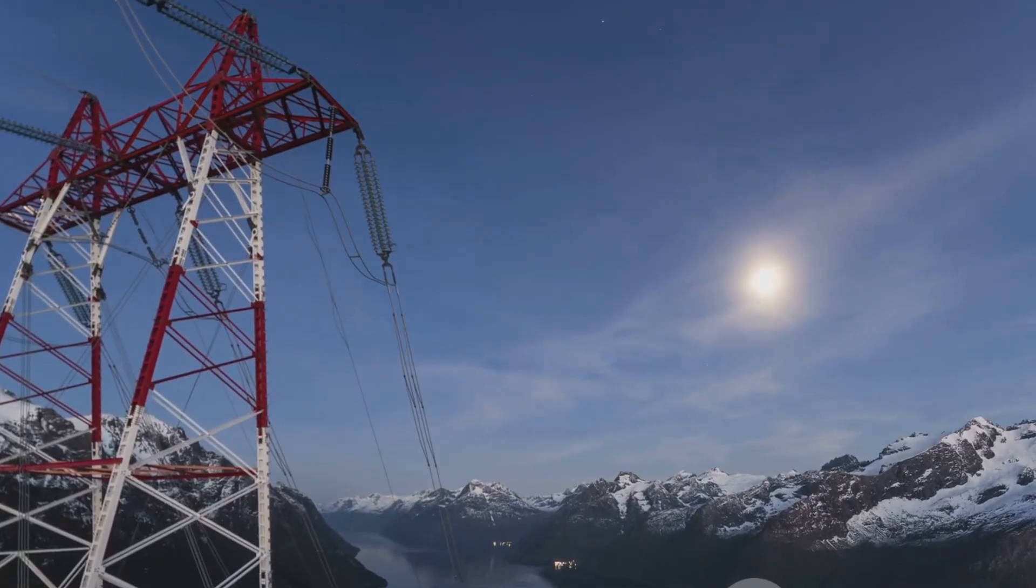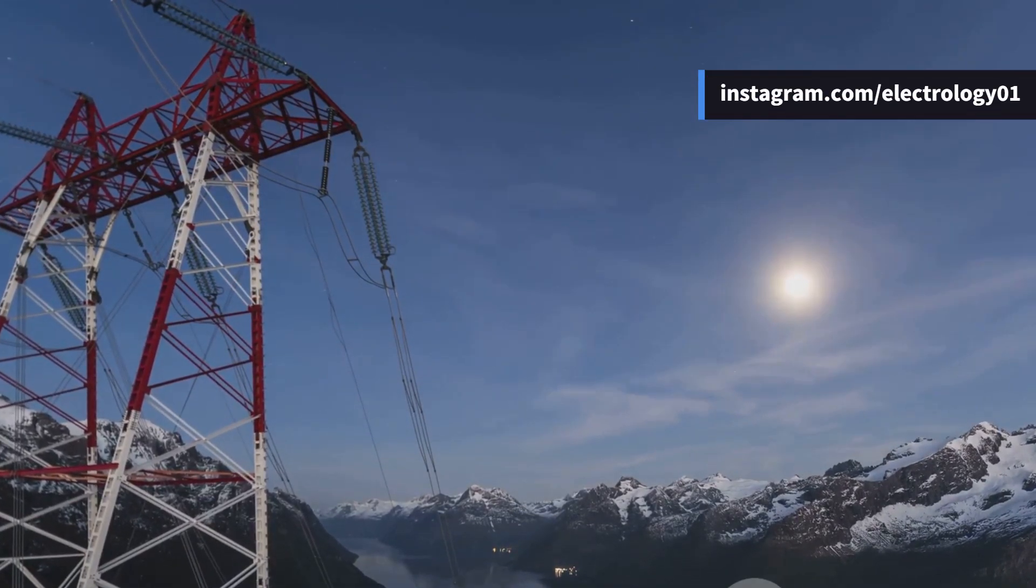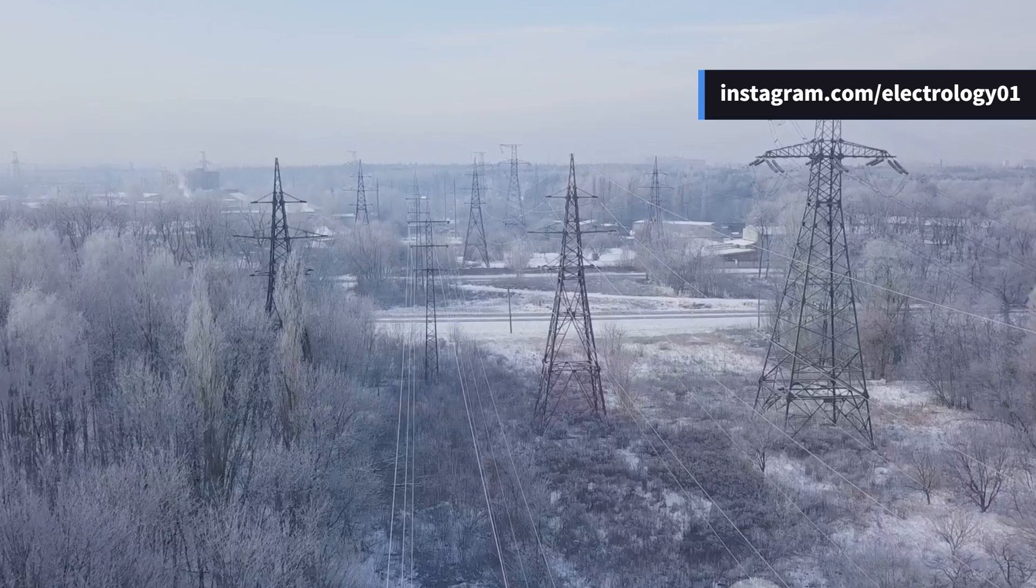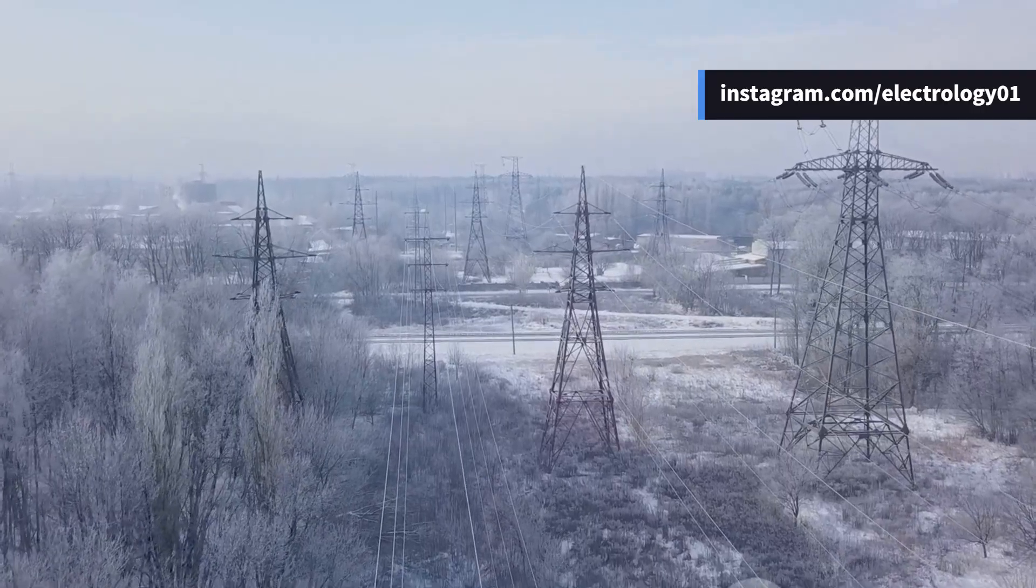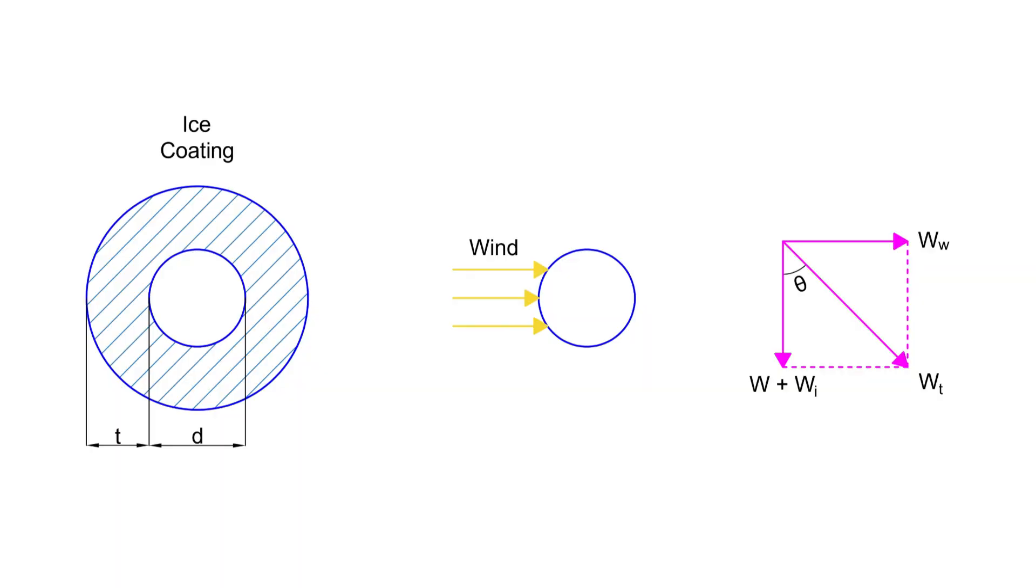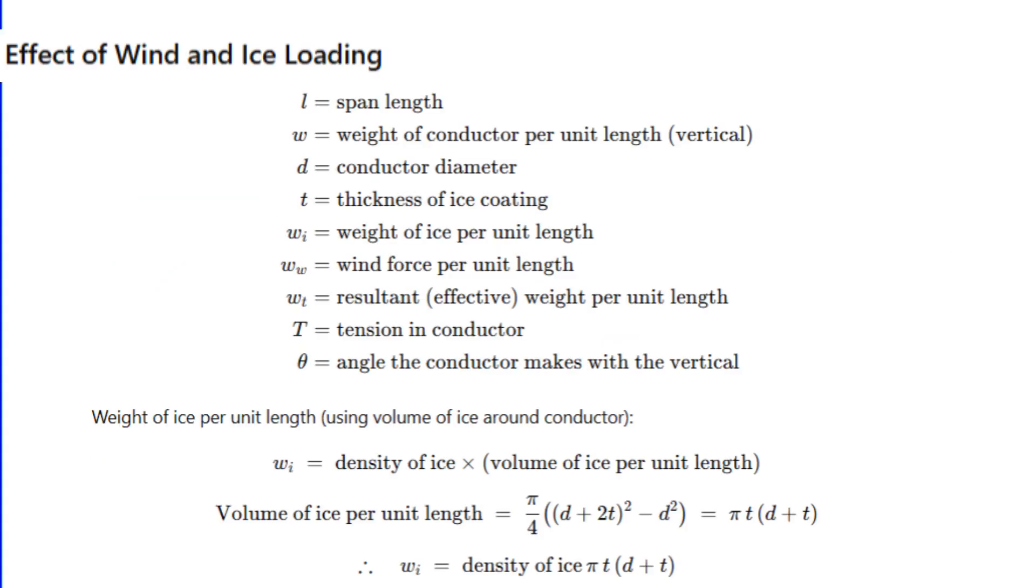Now let's make it even more realistic. In practice, conductors don't just carry their own weight—they often get coated with ice in cold areas, and at the same time wind pressure acts horizontally. So the total force is the vector sum of vertical and horizontal forces. The weight of conductor per meter is w, the weight of ice per meter is wᵢ, which equals density of ice multiplied by π·t·(d + t), where d is conductor diameter and t is ice thickness.